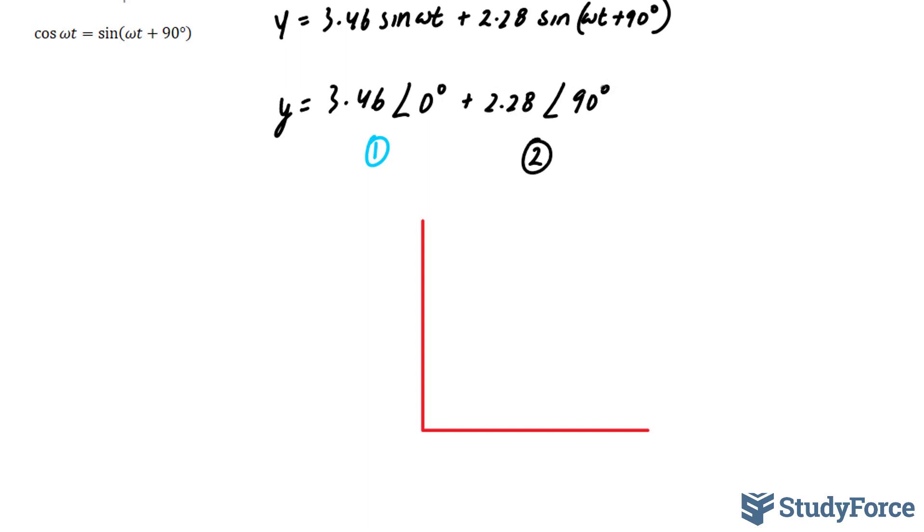Starting off with this one, we have 2.28 at an angle of 90 degrees. So this line here will represent 2.28 at 90 degrees. And 3.46 will be represented with this blue line. And since it's at an angle of zero, we show it on the x-axis. So this is 3.46.